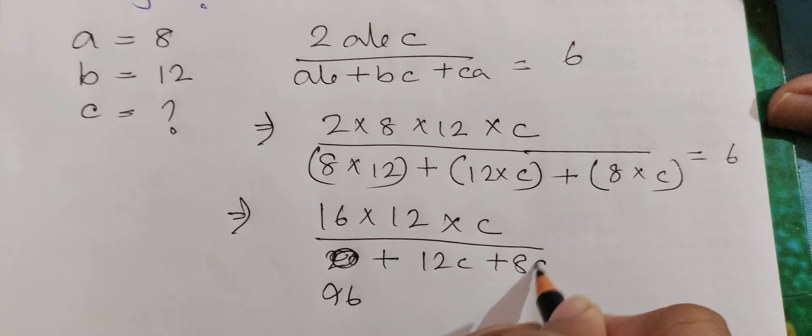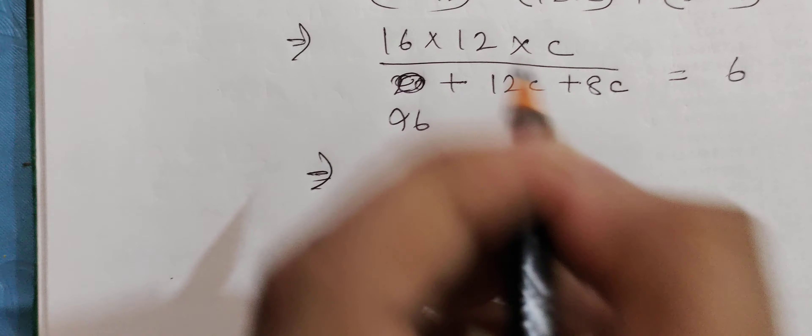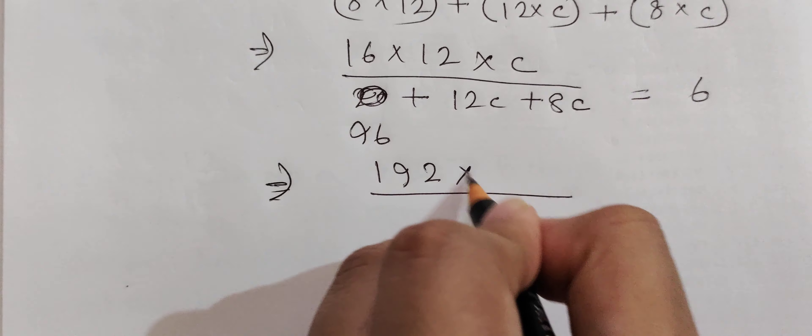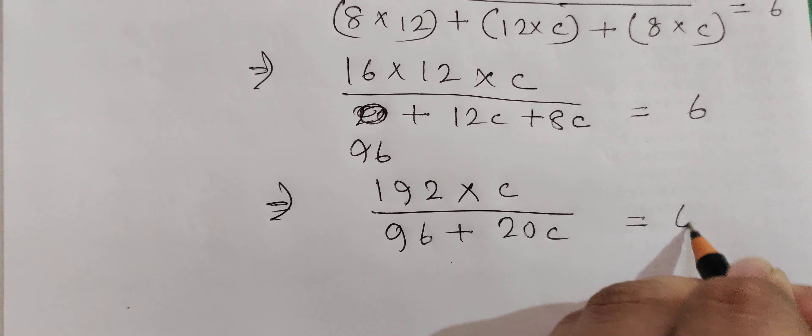This is 96. And we have 8c. So multiplying out, 192 times c divided by (96 plus 20c) equals 6.